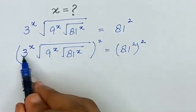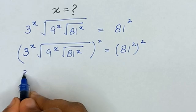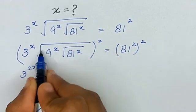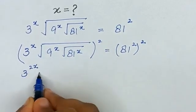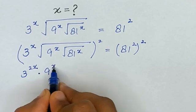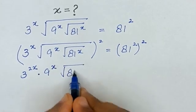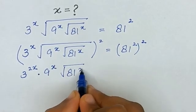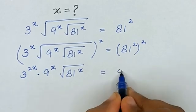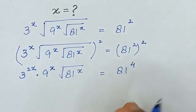So 3^x squared is the same as 3 raised to the power 2x, and this square and square root will be cancelled out. So it will be 9 raised to the power x, and here we have 81 raised to the power x, which is equal to 81 raised to the power 2 times 4.